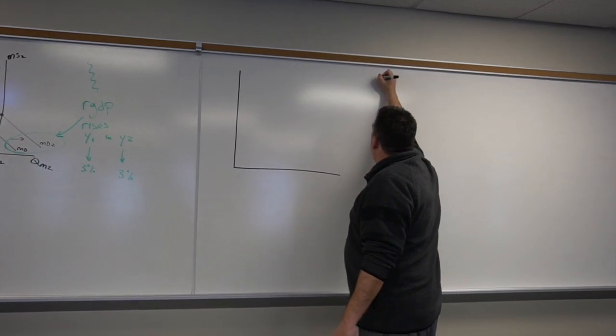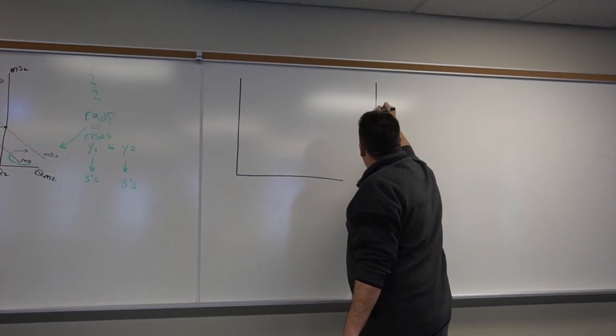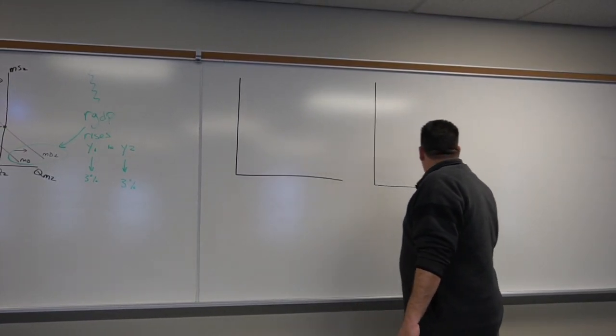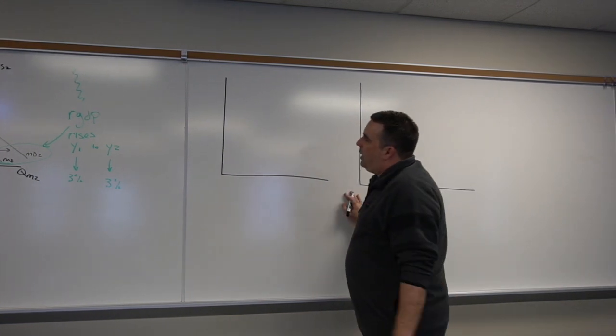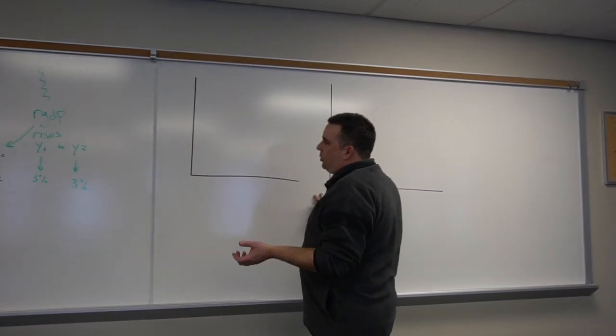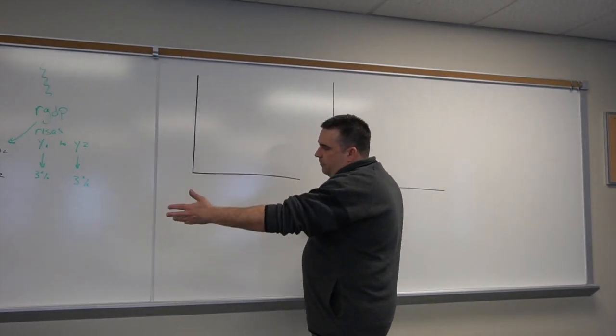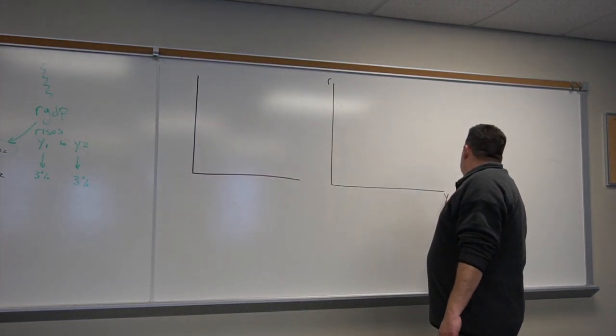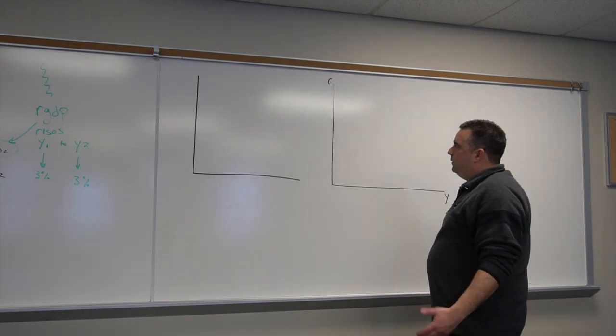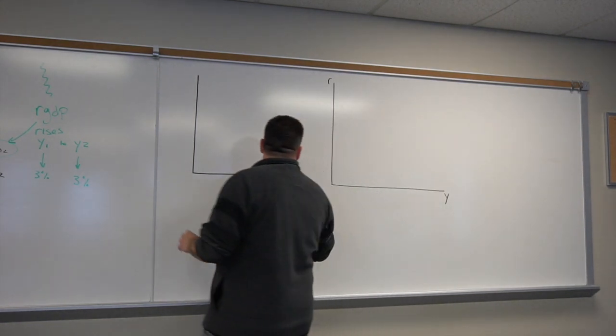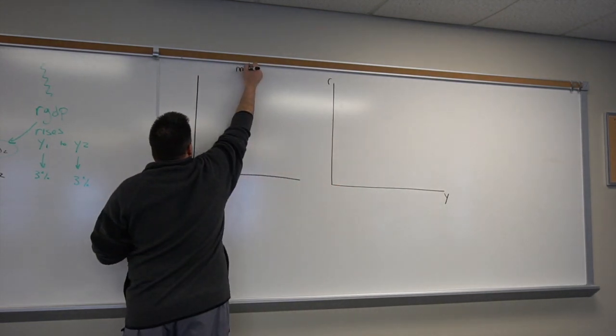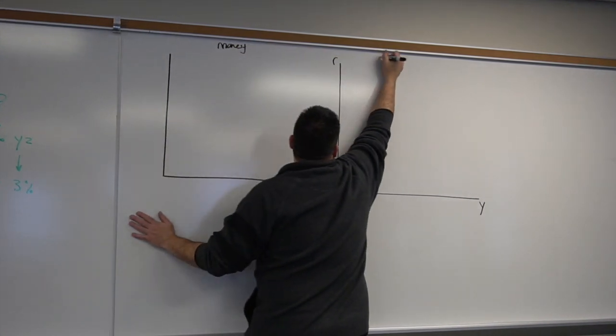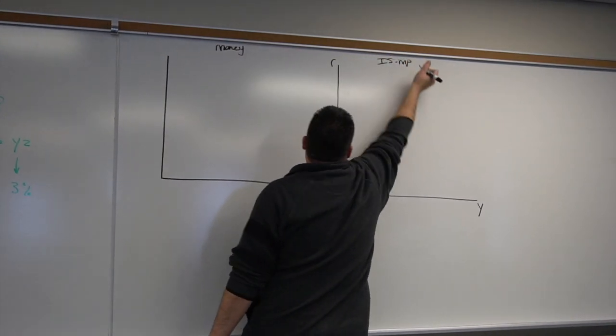I'll go ahead and do it as a two-panel graph because I think that's how I have it set up in our outline. So we know that in our ISMP model, we want to show R and Y. And we know from finding the IS curve, we're going to keep R up here and Y down here. Perfect.